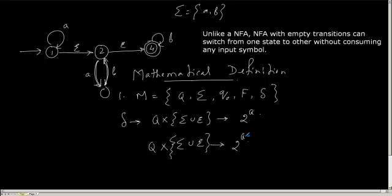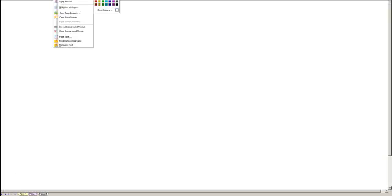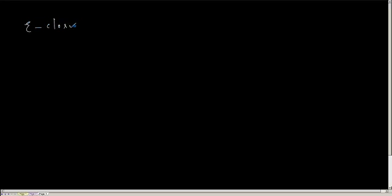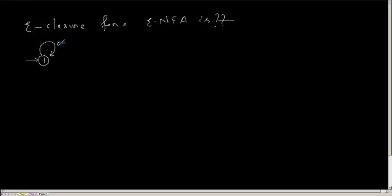One important thing we will discuss is the extended transition function. But before that, let me tell you one more thing called epsilon closure. Do people know what epsilon closure for a NFA is? With epsilon transition, what are the possible set of states I can reach?